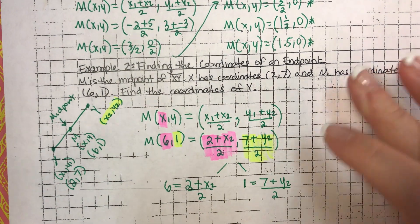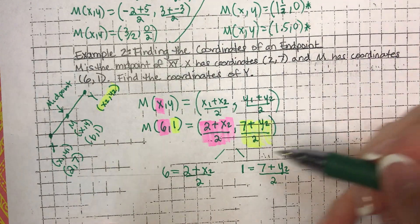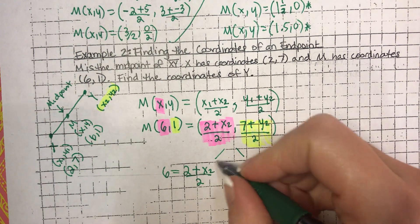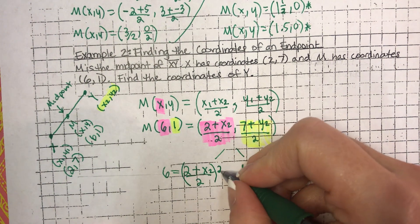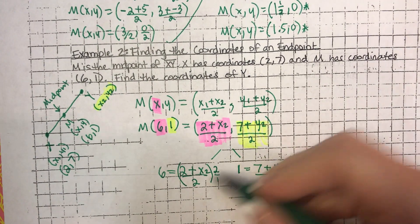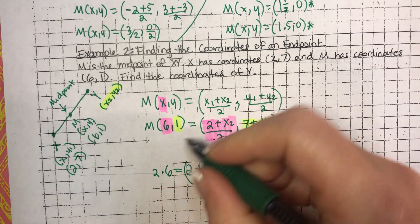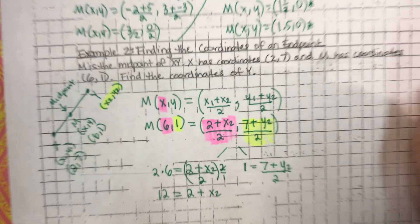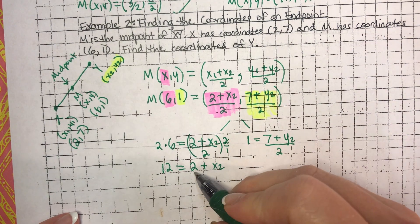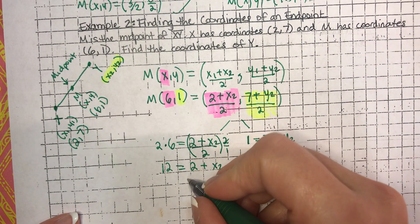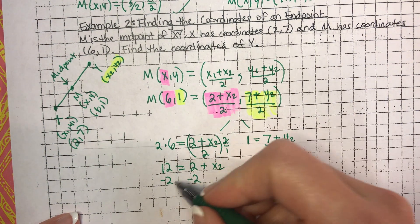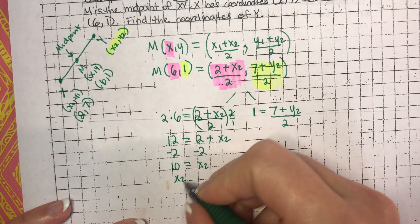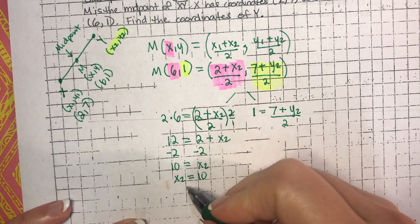I'm going to solve this one first. To do that, I've got to get X2 by itself. All of this is divided by two, so I'm going to do the inverse of division, which is multiplication, and multiply this whole thing by two. The twos are going to cancel out. Whatever I do to one side, I have to do the other. So two times six is going to be 12, equals - these cancel - I'm left with two plus X2. Now it's just a simple algebra problem. I have to do the inverse, which would be minus two to both sides. Twelve minus two is 10, equals X2. So X2 equals 10.